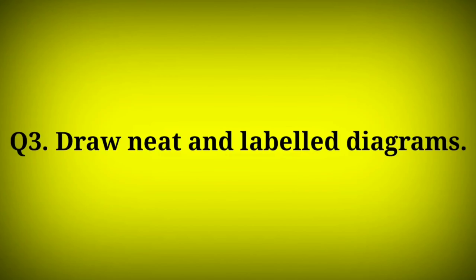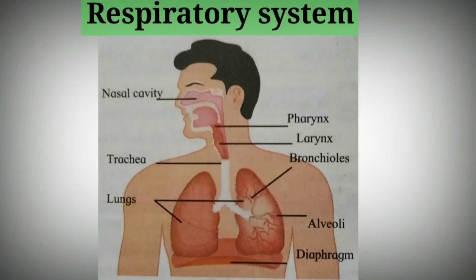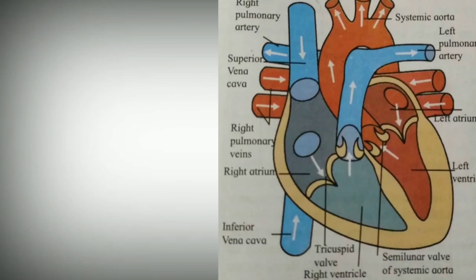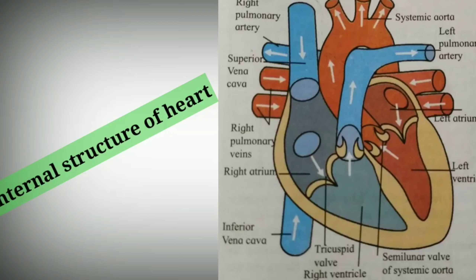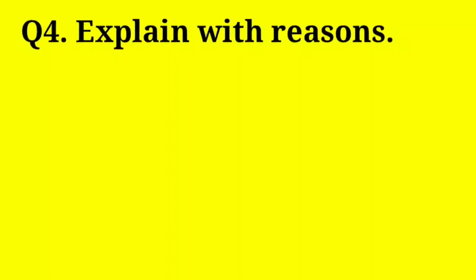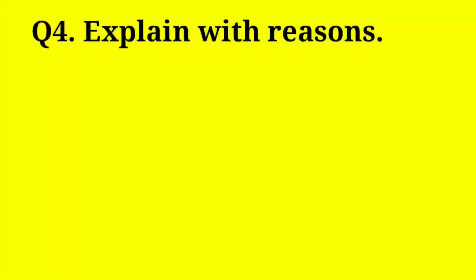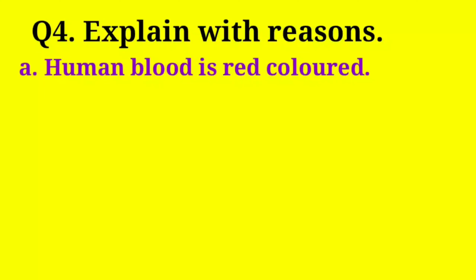Question 3 – Draw neat and labeled diagrams. This is the diagram of the respiratory system; look carefully and draw it neatly in your notebook. This is the diagram of the internal structure of the heart.